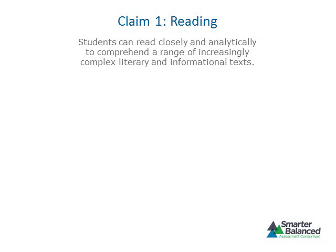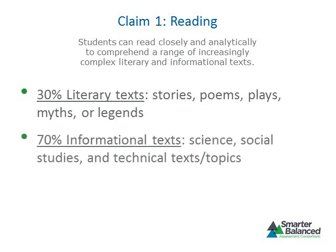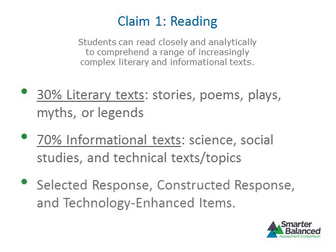Claim 1 states that students can read closely and analytically to comprehend a range of increasingly complex literary and informational texts. To elicit evidence for Claim 1, all items will be accompanied by one or more grade-appropriate passages. At the high school level, 30% of items will focus on literary texts such as stories, poems, plays, myths, or legends, while 70% will focus on informational texts, which may include passages specific to science, social studies, or technical topics. Evidence for Claim 1 will be provided by selected response, constructed response, and technology-enhanced items that focus on a particular skill or concept.